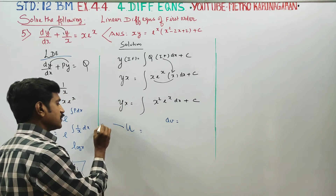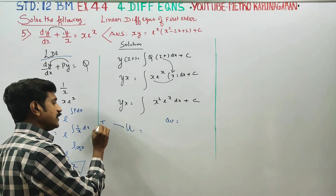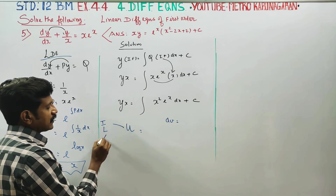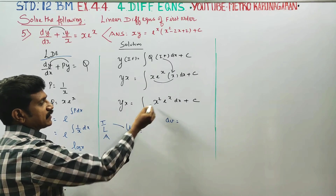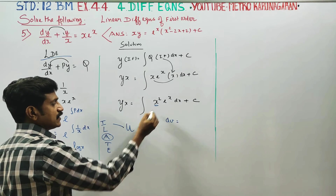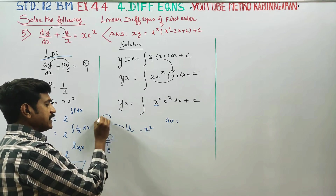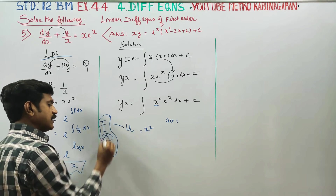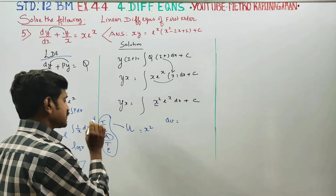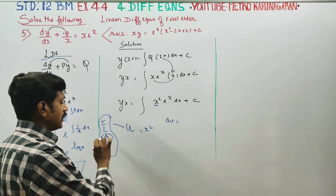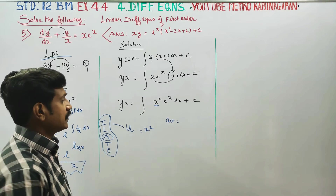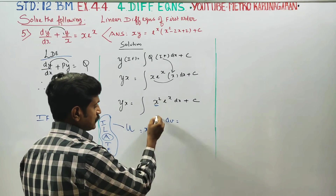This method uses the UDV formula following the ILATE rule: I for Inverse function, L for Logarithm, A for Algebra, T for Trigonometric, E for Exponential. We choose u and v accordingly.